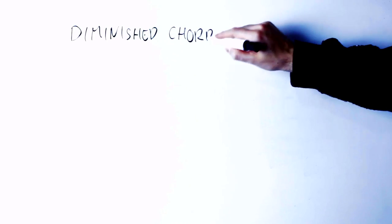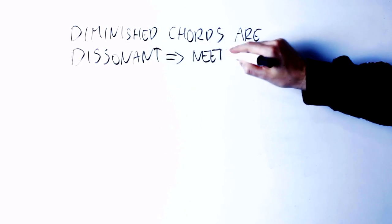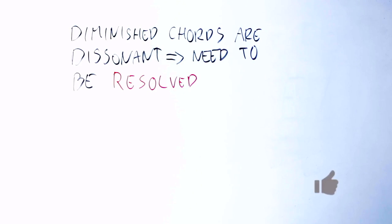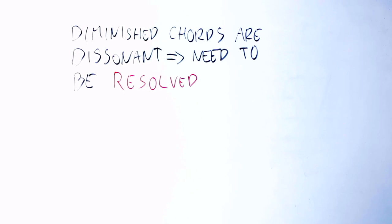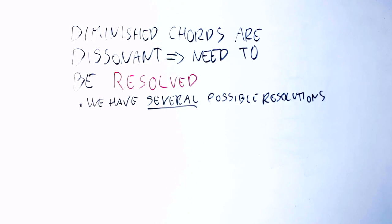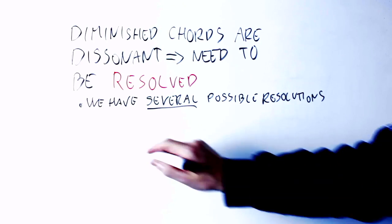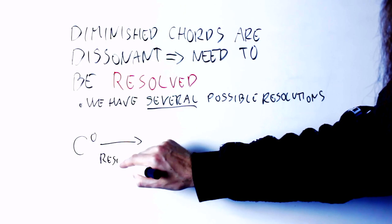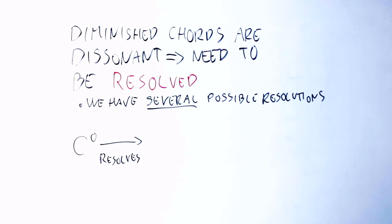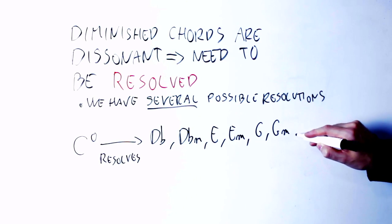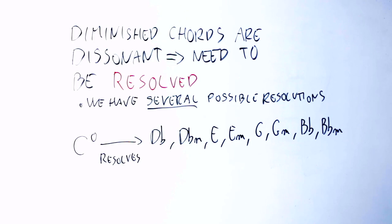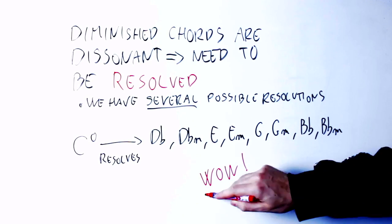The second thing you need to know is how diminished seventh chords resolve. Diminished chords, as you can hear, are dissonant, and so they need to resolve into another chord. Every diminished chord can resolve in several different ways. For instance, the C diminished seventh chord can resolve to D flat major, D flat minor, E major, E minor, G major, G minor, B flat major, and B flat minor.